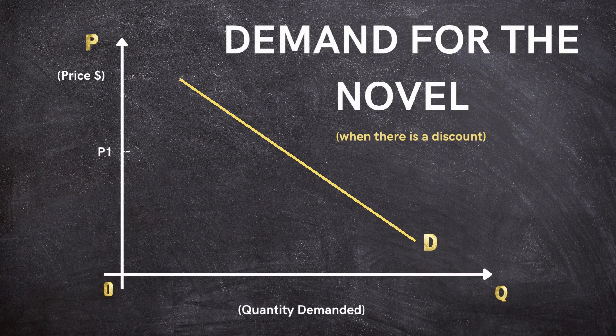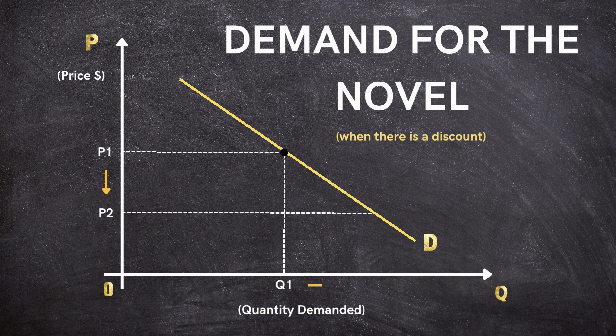As the price drops from P1 to P2, the quantity demanded surges from Q1 to Q2, leading to a movement along the demand curve.